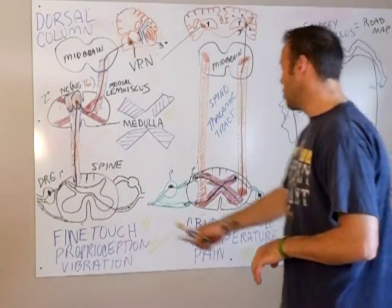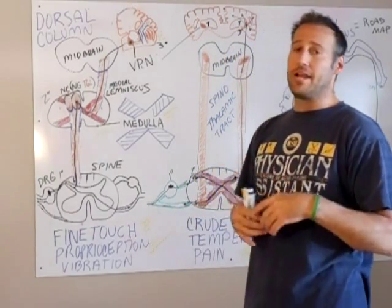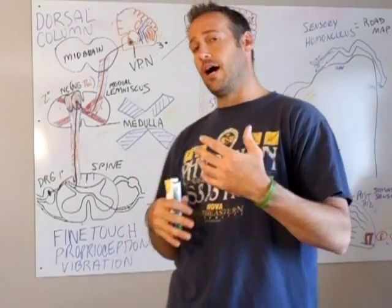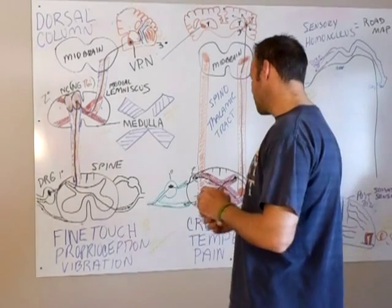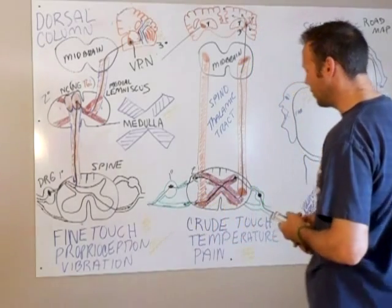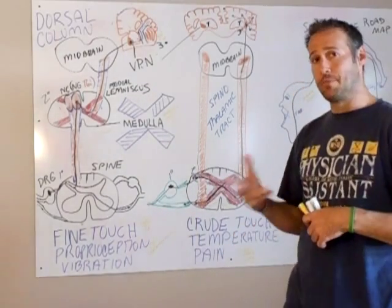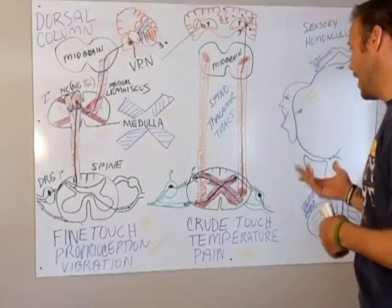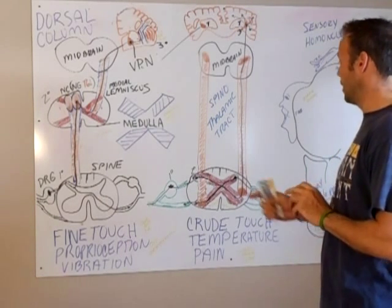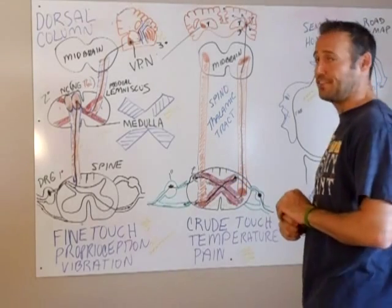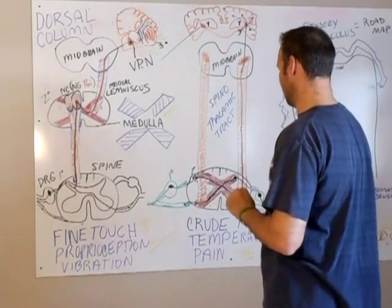Other things to know: proprioception. One thing that may come up is proprioception of the face. Good to know that proprioception of the face travels through the chief sensory nucleus. If you're dealing with pain or temperature of the face, that goes through the spinal nucleus. So proprioception goes through the chief sensory nucleus, while temperature and pain go through the spinal nucleus.